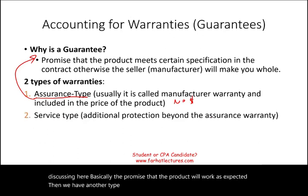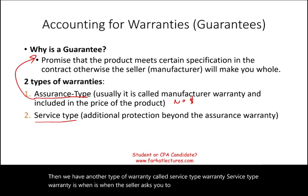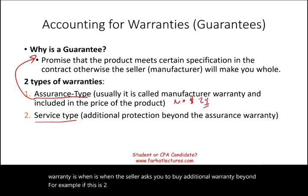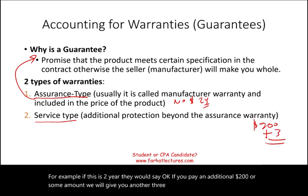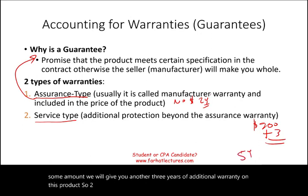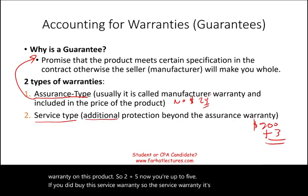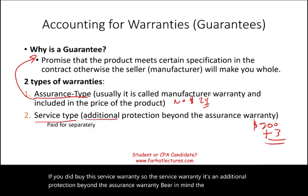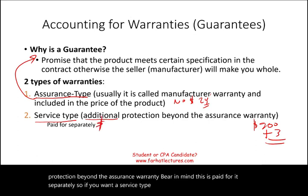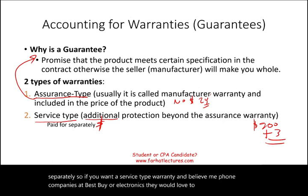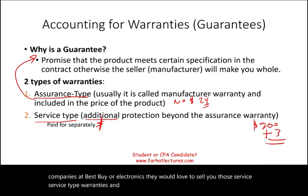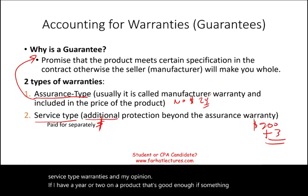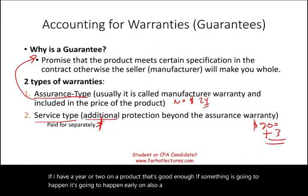The second type is the service type warranty. This is when the seller asks you to buy additional warranty coverage beyond the standard period. For example, if the standard is two years, they might say: pay an additional $200 and we'll give you another three years, bringing you up to five years total. The service warranty is additional protection beyond the assurance warranty, and it is paid for separately. Phone companies and electronics retailers like Best Buy love to sell these service type warranties.